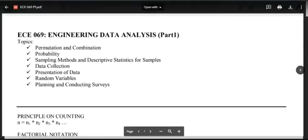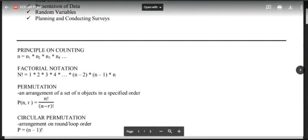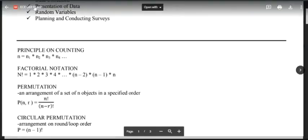Let's go to our first topic: the formula for the Principle of Counting. This is one of the formulas you need to know how to use. For your Principle of Counting, the total number of ways N is equal to n₁ multiplied by n₂ multiplied by n₃ multiplied by n₄ and so on. You will simply multiply the number of ways for each option or arrangement.